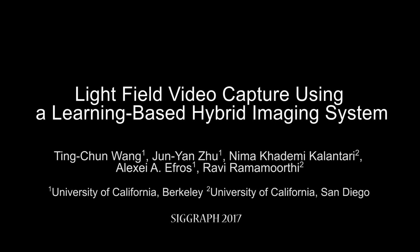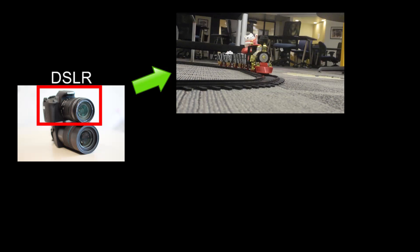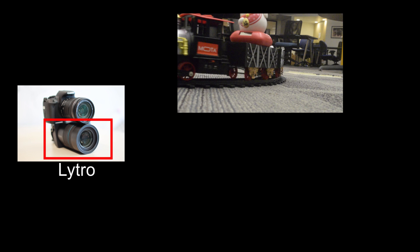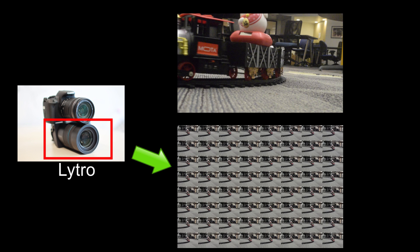We present a hybrid imaging system for capturing light field videos. Our setup consists of a DSLR and a Lytro Illum camera. The DSLR captures a standard 2D video at 30 frames per second. Note the shutter sounds the Lytro camera generates, which are used to sync the two cameras. The Lytro camera captures a 3 frames per second sequence of 8x8 light field images. Our system then combines these two videos and generates a full light field video.